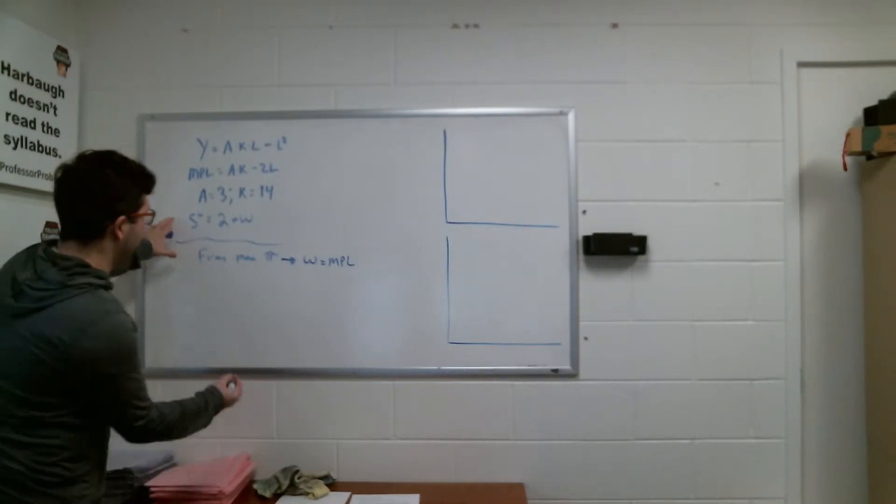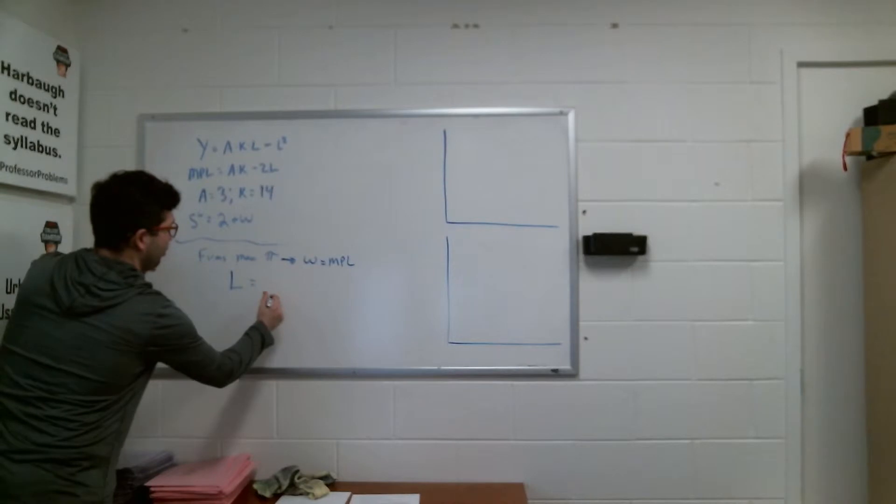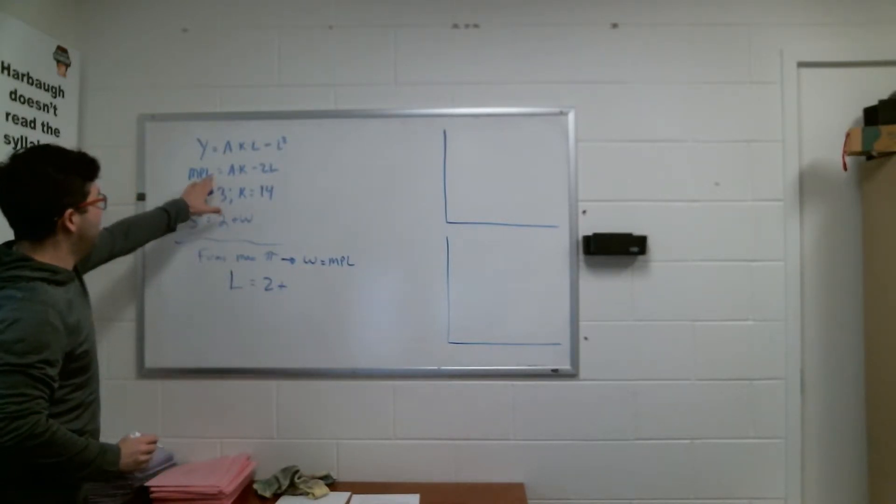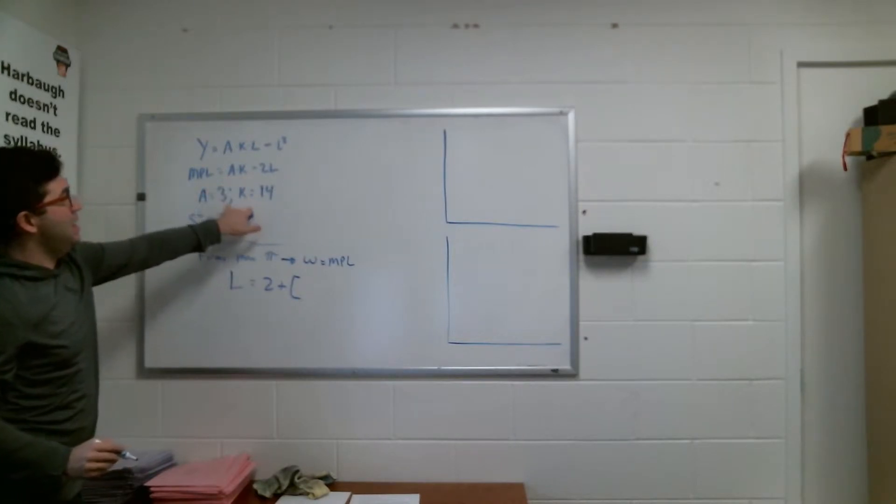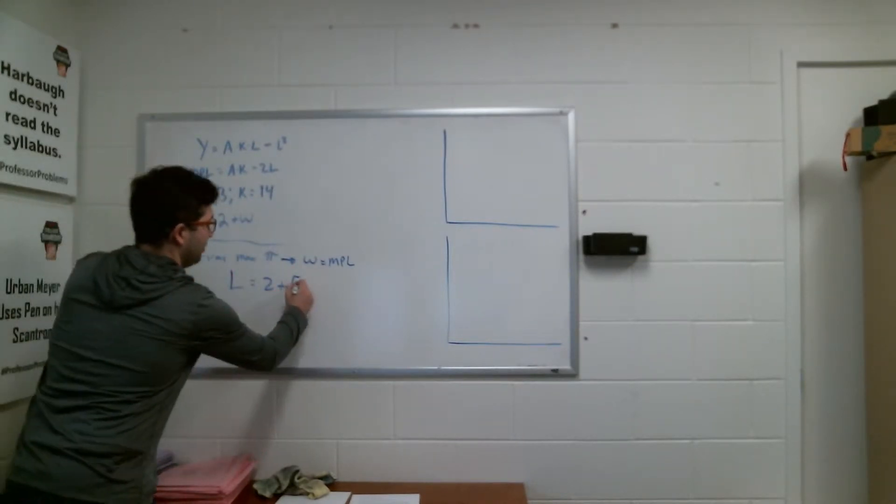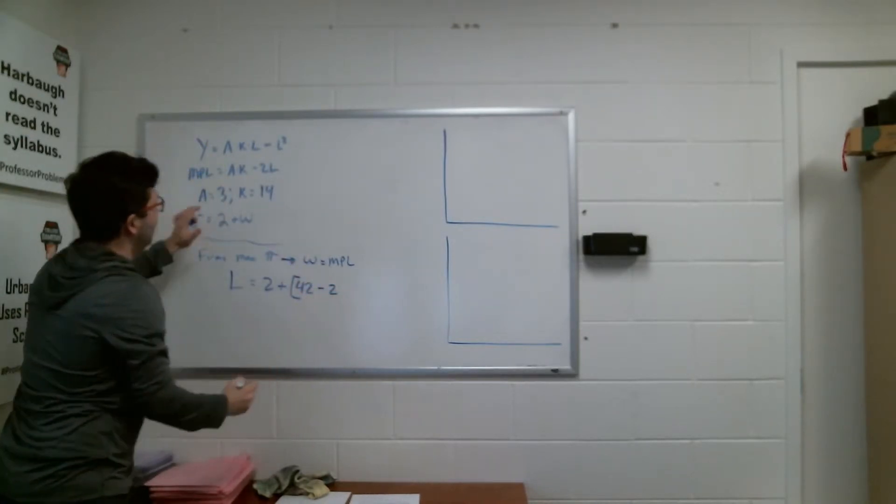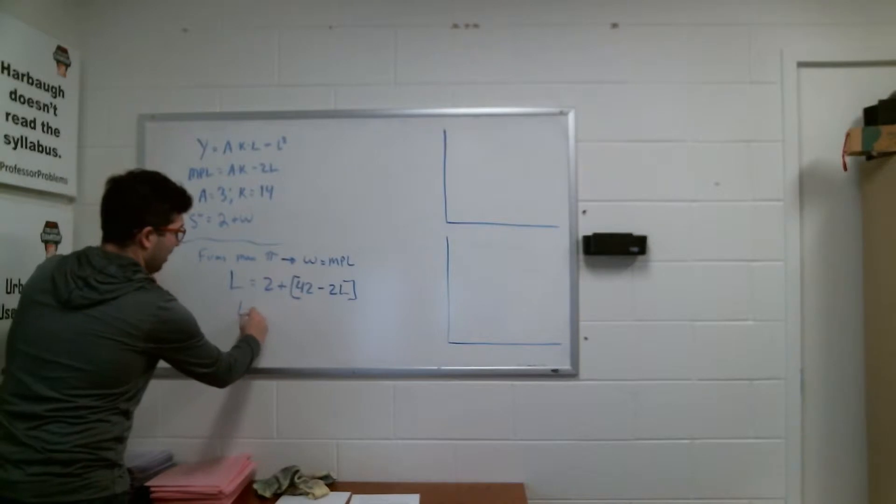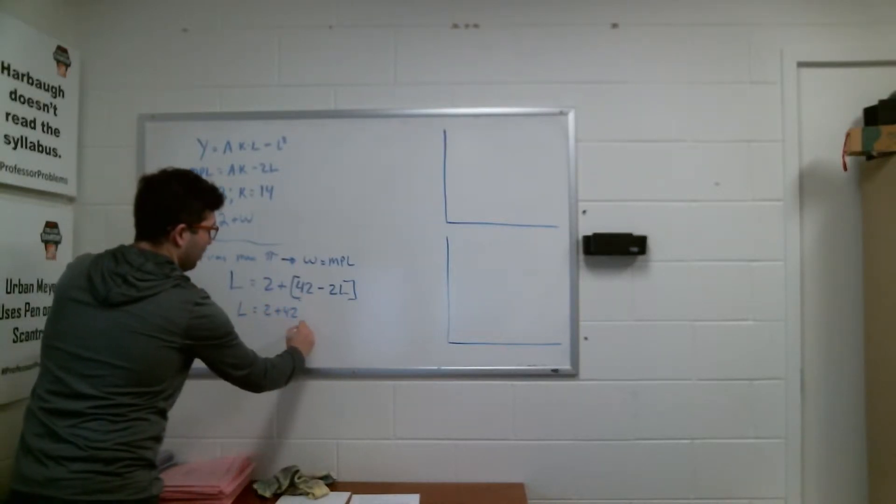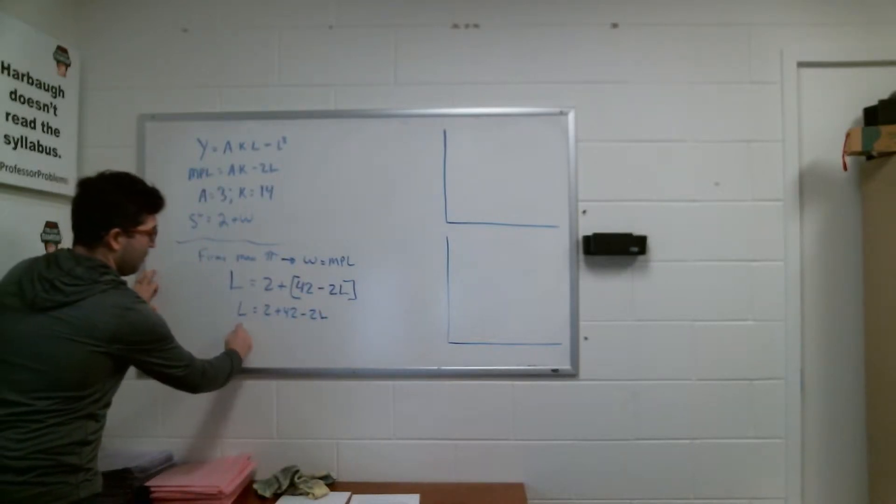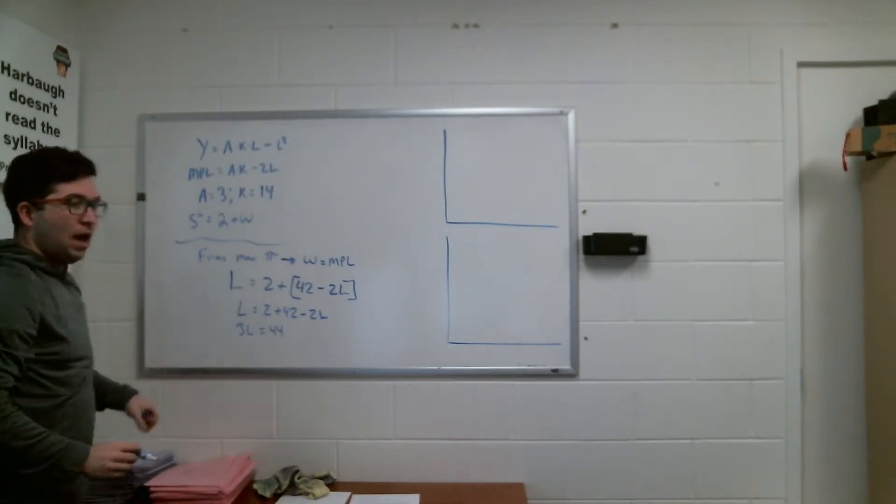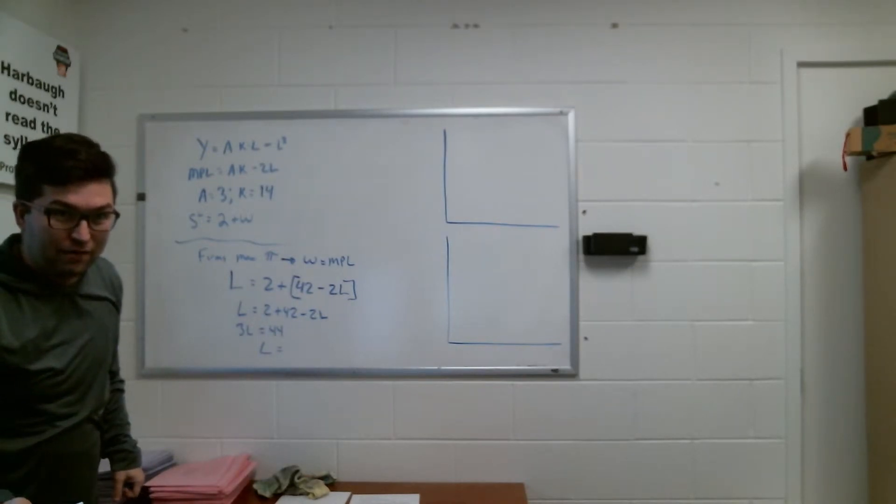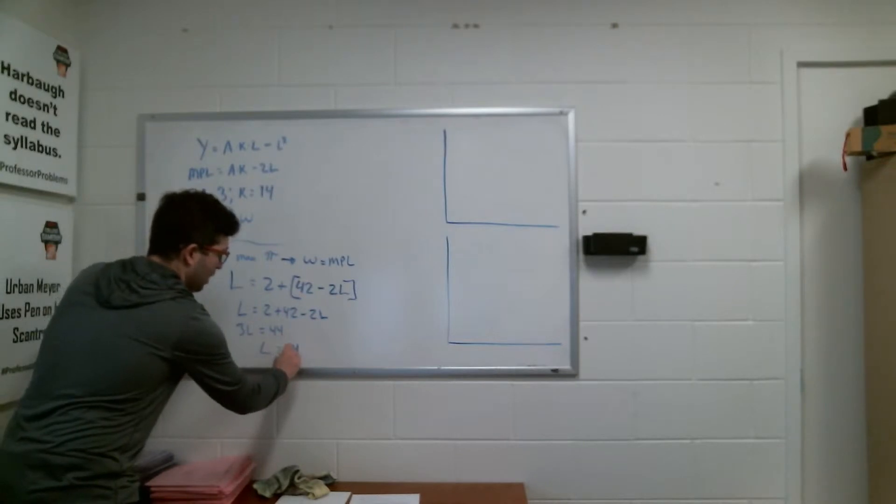We want to combine our supply of labor and our demand of labor to get us to one specific amount of labor and then the wage that will make that labor happen. I have my labor supply function, meaning that the total labor is going to equal 2 plus W. And I know my W has to also be my MPL, which allows us to do the following. Supply of labor is now just going to be my number of labor. So I have L equals 2 plus W, and we said that W is going to equal my MPL function, which is right up here. So 2 plus A times K, which was given, 3 times 14 is 42, minus 2 times L. And L is our unknown. That's what we're trying to solve for.